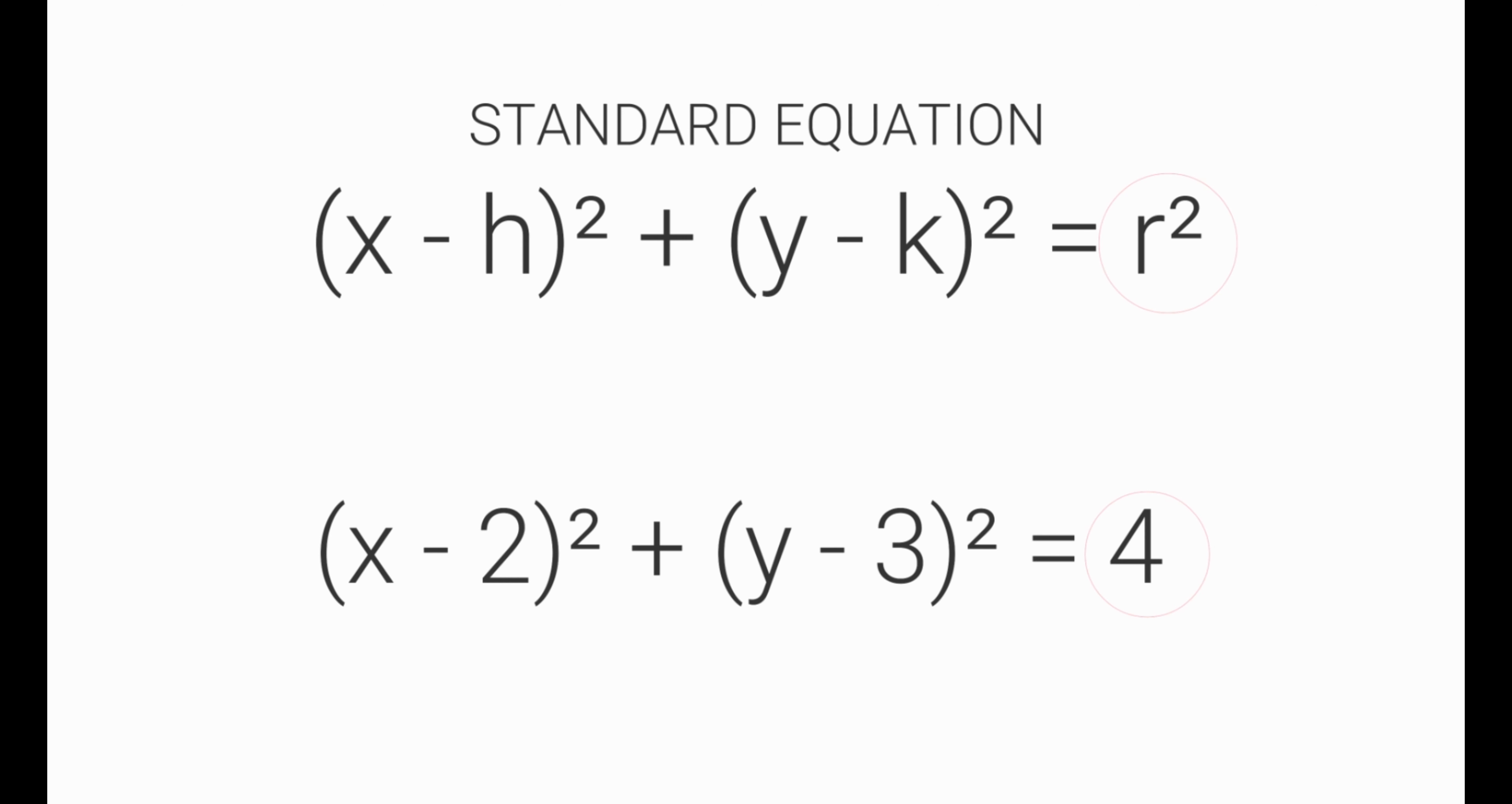After determining the center, the next step is to find the radius of the circle. Looking at the standard equation, we can see that the value on the right side or the constant represents r squared.